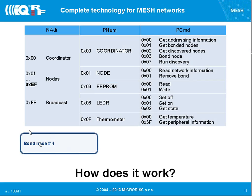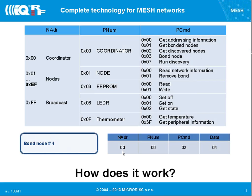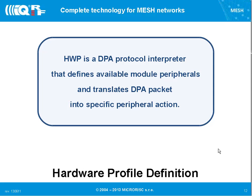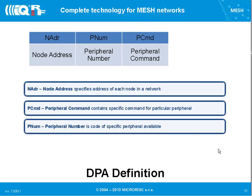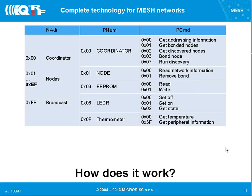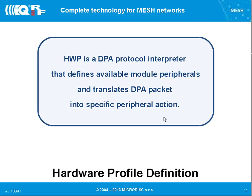To show examples: if you want to bond node number 4 to the coordinator, you send: node address = coordinator, peripheral = coordinator peripheral, peripheral command = bond node, data = 04. To get temperature from node number 5, you send: node address = 05, peripheral number = 0, get temperature command = 00, send it, and you get the temperature back. That is the easy way it works.